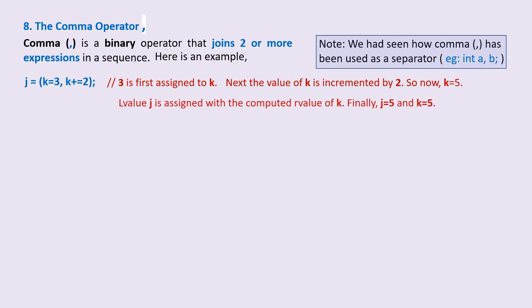L-value j is assigned with the computed r-value of k. Finally, j is 5 and k is also 5.